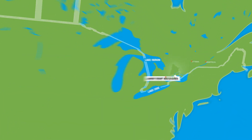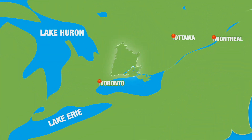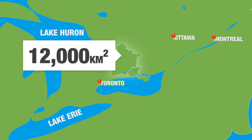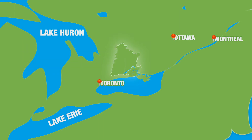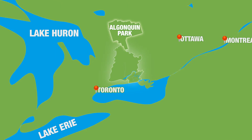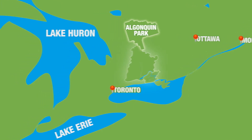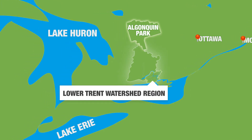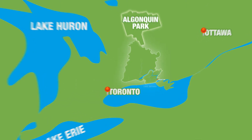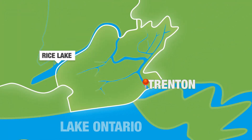The Trent River system drains more than 12,000 square kilometers of central Ontario. The Trent River has its headwaters in Algonquin Park. The Lower Trent Watershed region includes the lower portion of the Trent River watershed downstream of Rice Lake.